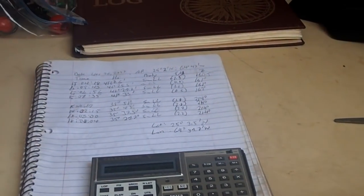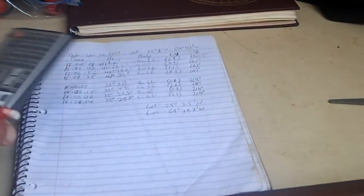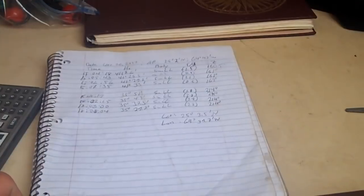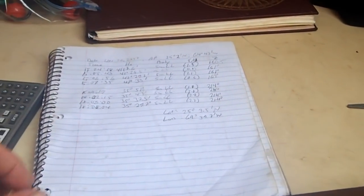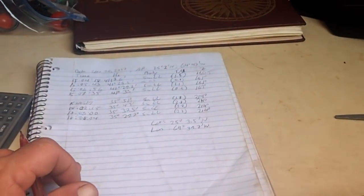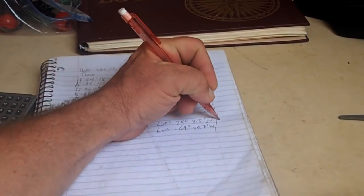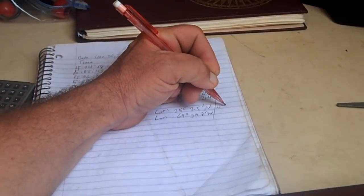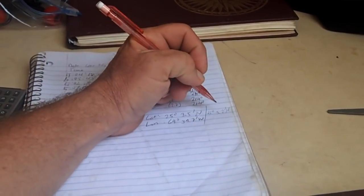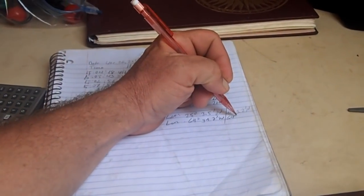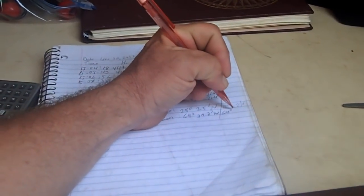And the GPS is saying that we are at 25 degrees, 3.2 minutes north, and 64 degrees, 37 minutes west.